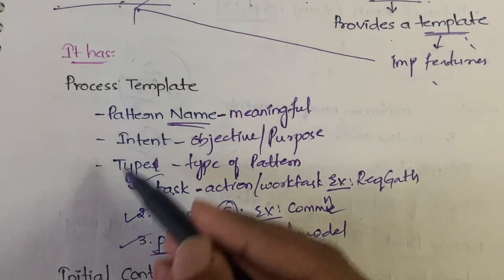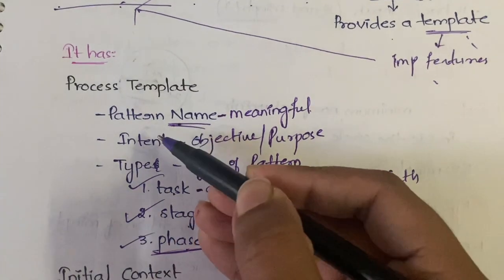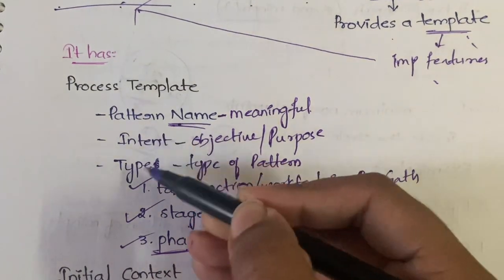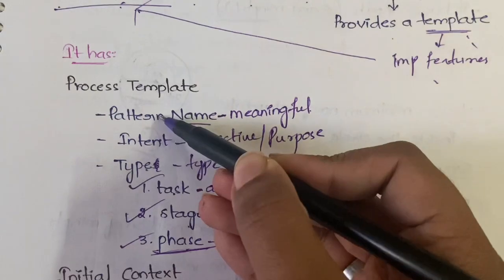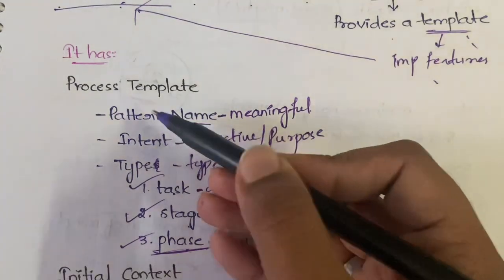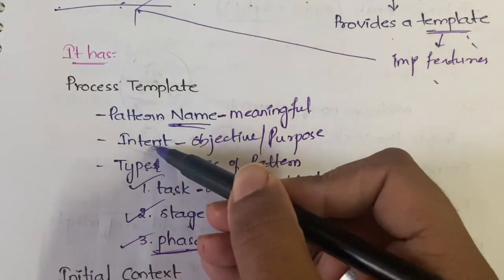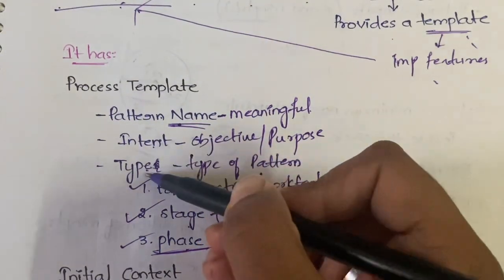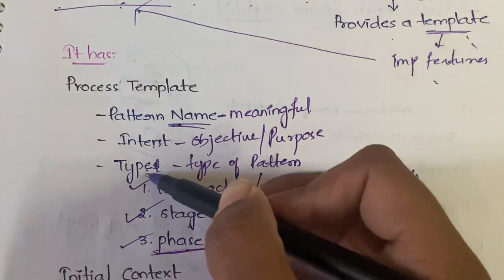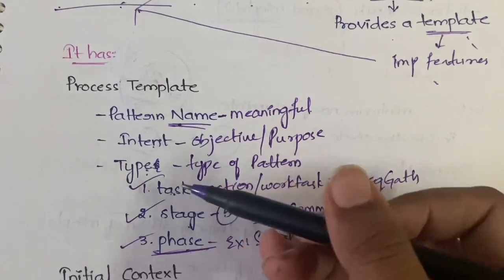The process template has three things: pattern name, intent, and type. The pattern name has to be a meaningful name, the intent is the purpose of the pattern, and the type indicates one of three types — task, stage, and phase.